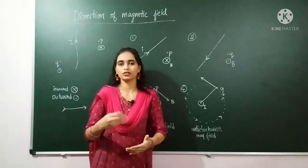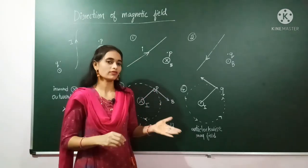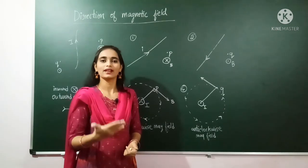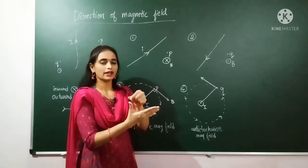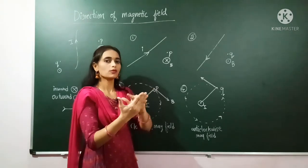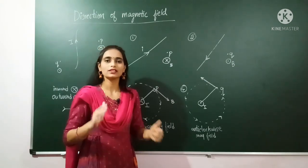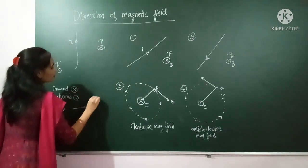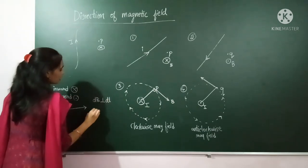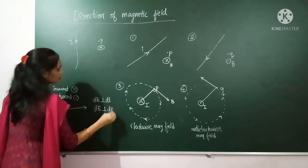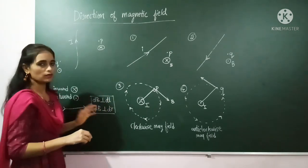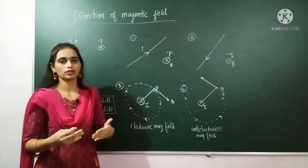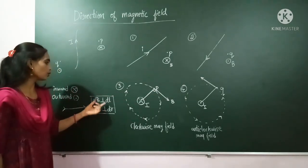This is how we determine the direction of the magnetic field using the right-hand palm rule. If you use the left hand, all answers come out reversed, so always use the right hand. Remember: place the thumb in the direction of current, and wherever the fingers curl shows the direction of the magnetic field. Also remember for mathematical calculation that dB is always perpendicular to dl.